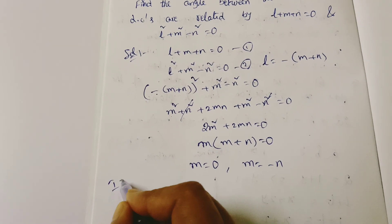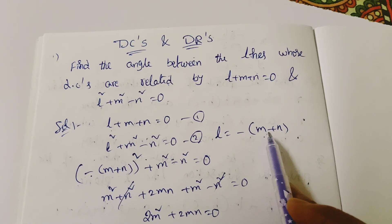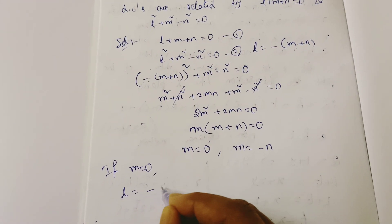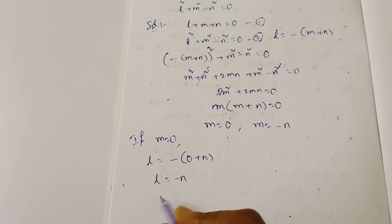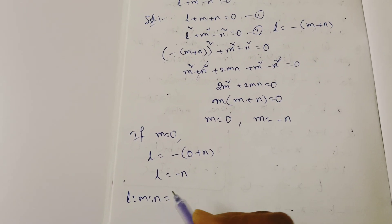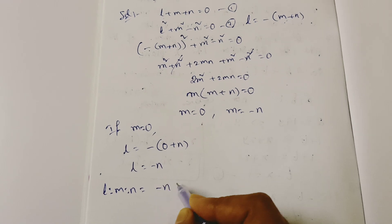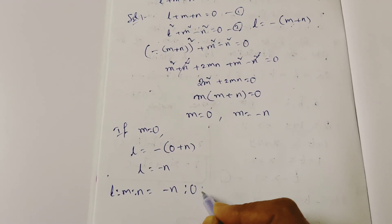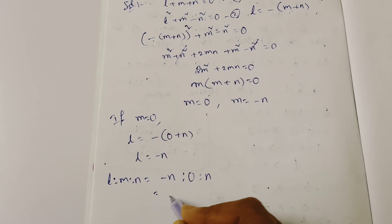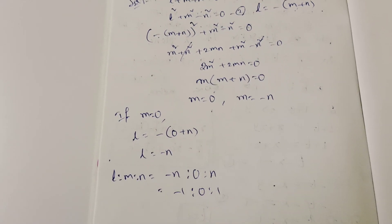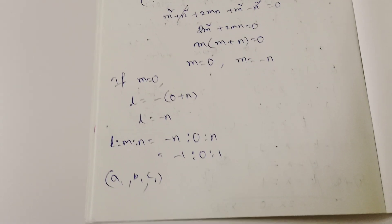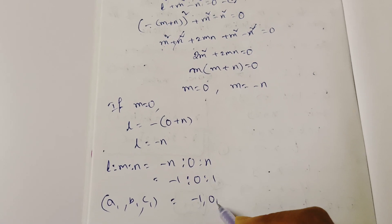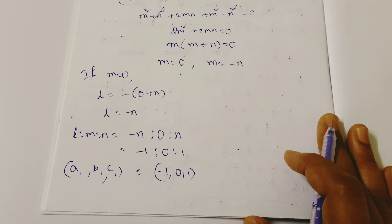Case 1: If M equal to 0, then from the first equation L equal to minus N. So the direction ratios L:M:N are minus N : 0 : N, giving a1, b1, c1 as minus 1, 0, 1.